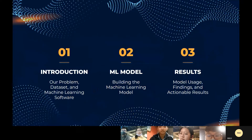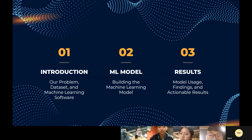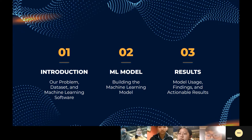This is our outline. First we're going to introduce our problem, dataset, and machine learning software that we're going to use. Secondly, we're going to talk about the machine learning model and how we're going to implement it. And lastly, we're going to talk about the results and actionable findings.